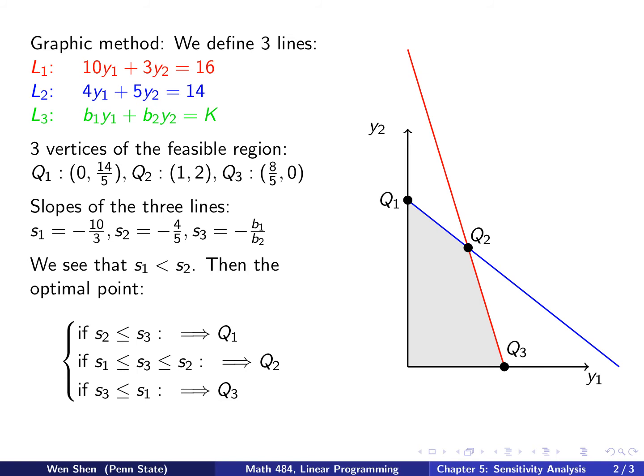Okay, so three vertices of the feasible region of interest, we label it here, q1, q2, and q3. So here q2 is the intersection of those two lines, red and blue, and you could solve these two equations and find y1, y2, and you'll see that's 1 and 2. Okay?